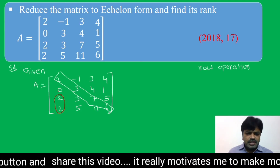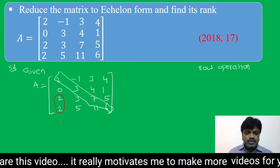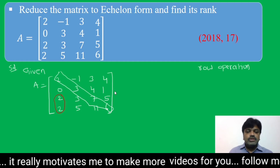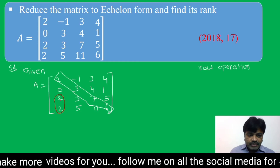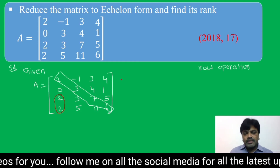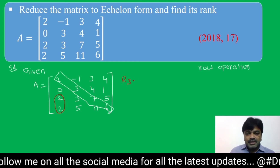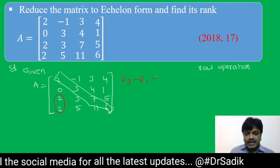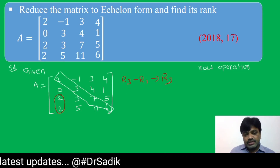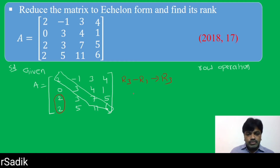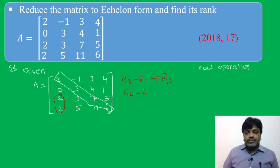I want to make these two elements 0. Here we have 2 and 2, so the row operation is R3 minus R1 in place of R3 — the transformation occurs in R3. Similarly, 2 and 2, so the second row operation is R4 minus R1 in place of R4.